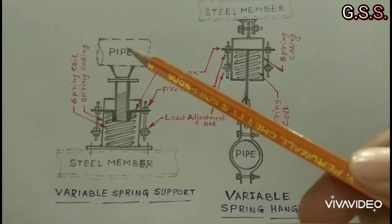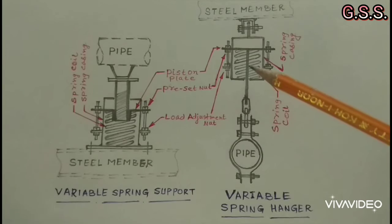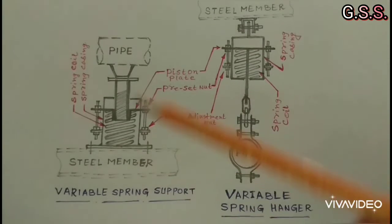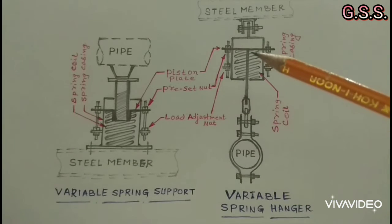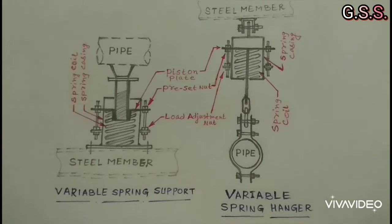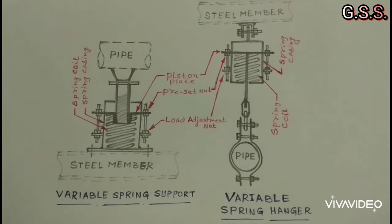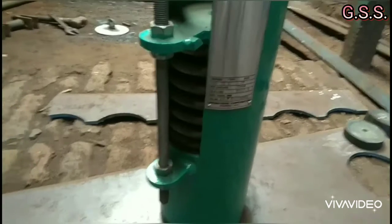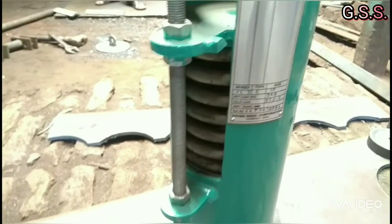If the pipeline moves down in operating condition, the spring is compressed and provides more supporting effort. If the pipeline moves up in operating condition, the spring expands and provides less supporting effort. Use of variable spring support or hanger is limited to a vertical movement of approximately 40 mm and a load variation of 25%.